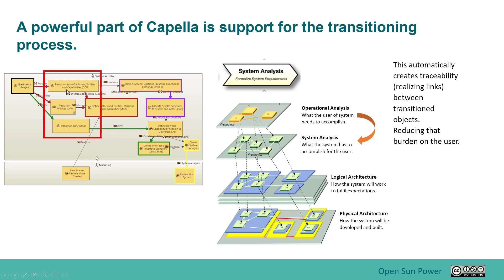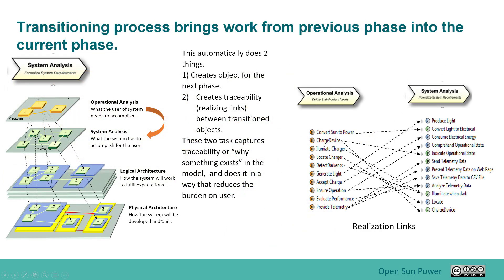In the transition process, you can transition over the operational analysis actors and bring them to system analysis. You can do activities, capabilities, and even operational processes can be brought across. When you do this transition, it essentially does two things automatically: it creates the object for the next phase with the same name as the object before, and it creates these traceability or realization links that basically connect the two.